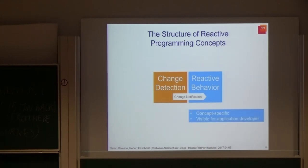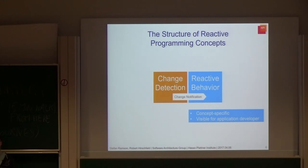There are numerous ways to propagate change. For example, you can invoke some kind of callbacks, automatically update some data structures, or alter the behavior of objects in accordance with the change. The complete reactive behavior is subject to the very concept we are dealing with, and therefore the reaction is usually seen as the heart of a reactive programming concept. It's also the part with actual visible functionality for the user — the interesting part.